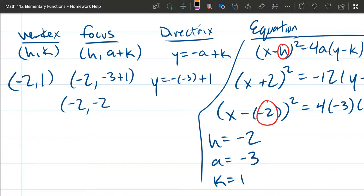The directrix y equals negative a plus k, so it's negative negative 3 plus 1. We got negative negative 3, which is positive 3 plus 1 is 4.